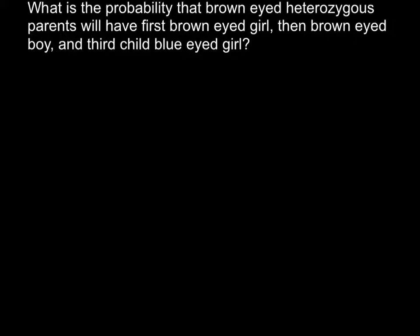Hi, today's video is going to be about probability and genetics. Today's problem is: what is the probability that brown-eyed heterozygous parents will have first a brown-eyed girl, then a brown-eyed boy, and the third child will have blue eyes and will be a girl.